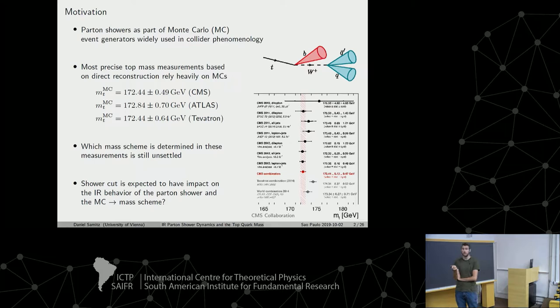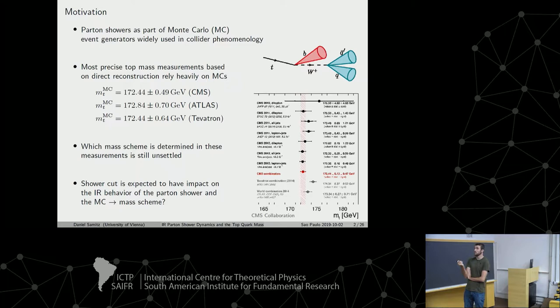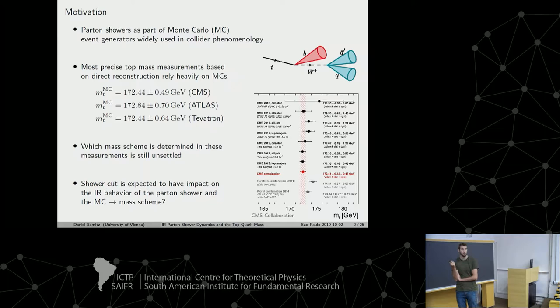To have a theoretical prediction to fit for the mass parameter, you need to simulate this complicated final state using Monte Carlo event generators. What we actually measure in these measurements is just this mass parameter in the event generator. It's not clear how this parameter relates to a well-defined field theoretical mass scheme like the pole mass. Since the shower cutoff has an impact on the infrared behavior of parton showers, we can ask what this means for the mass scheme of the top quark extracted in these measurements.